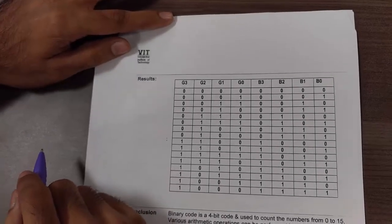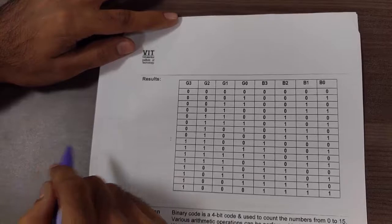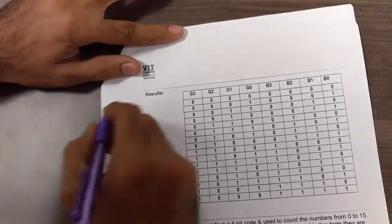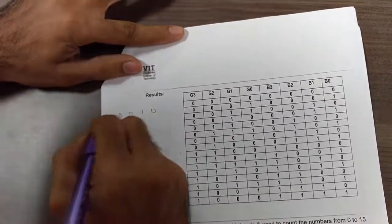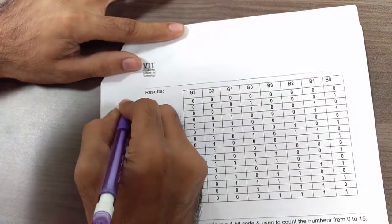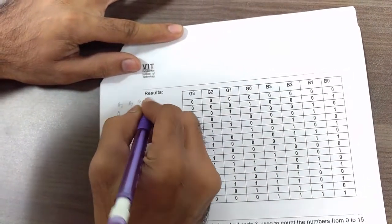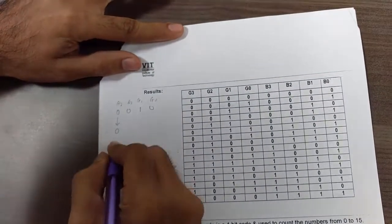So now let's first understand how to obtain binary code from grey code mathematically. Let us consider an example of grey code 0010. G3 G2 G1 G0. First bit we write it as it is. This is my B3.